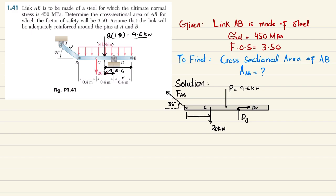From point B, the distance to the next reference point is 0.4 meters; the next segment is 0.2 meters, as shown. From D to the end the distance is 0.4 meters, and the middle distance is also 0.4 meters.